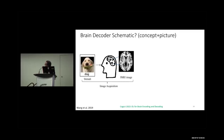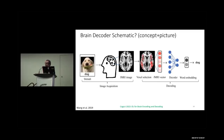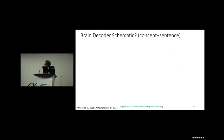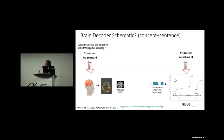For the concept-sentence view, the schematic is the same except the fMRI response comes from the sentence view. The informative voxels come from the concept-sentence view, but the stimulus representation is still only the concept representation (e.g., 'apartment'), not the whole sentence representation.